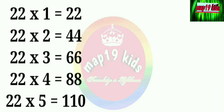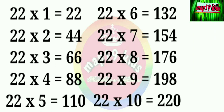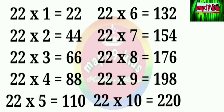22 1 is 22. 22 2 is 44. 22 3 is 66. 22 4 is 88. 22 5 is 110. 22 6 is 132. 22 7 is 154. 22 8 is 176. 22 9 is 198. 22 10 is 220.